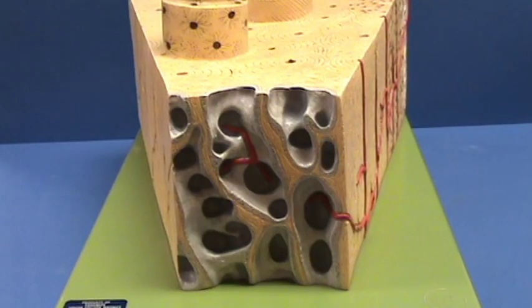And these lamellae which you find in between the osteons are referred to as the interstitial lamellae. This is the interior compartment.